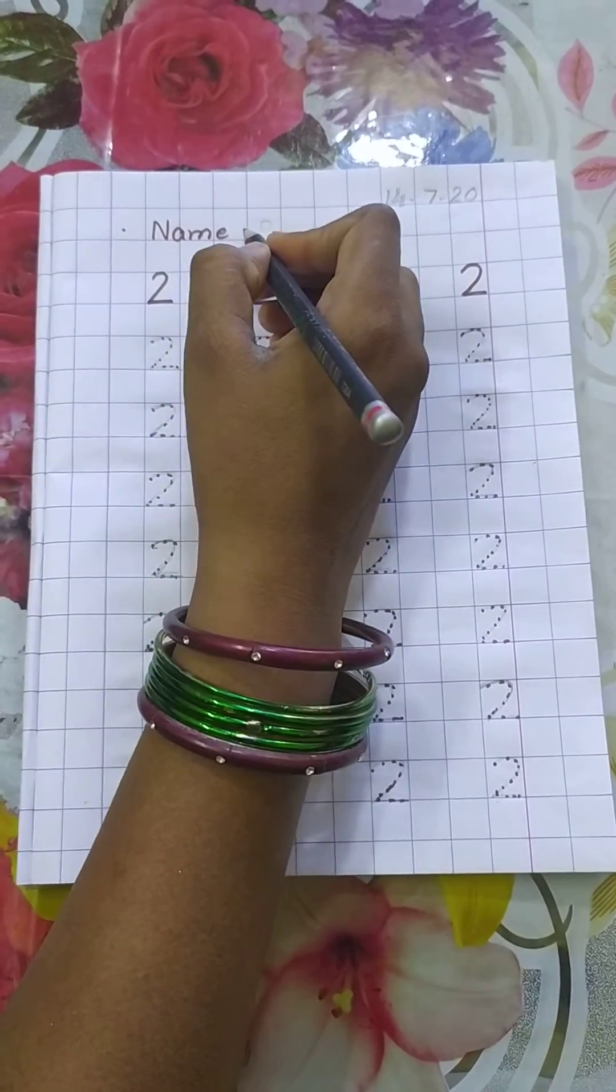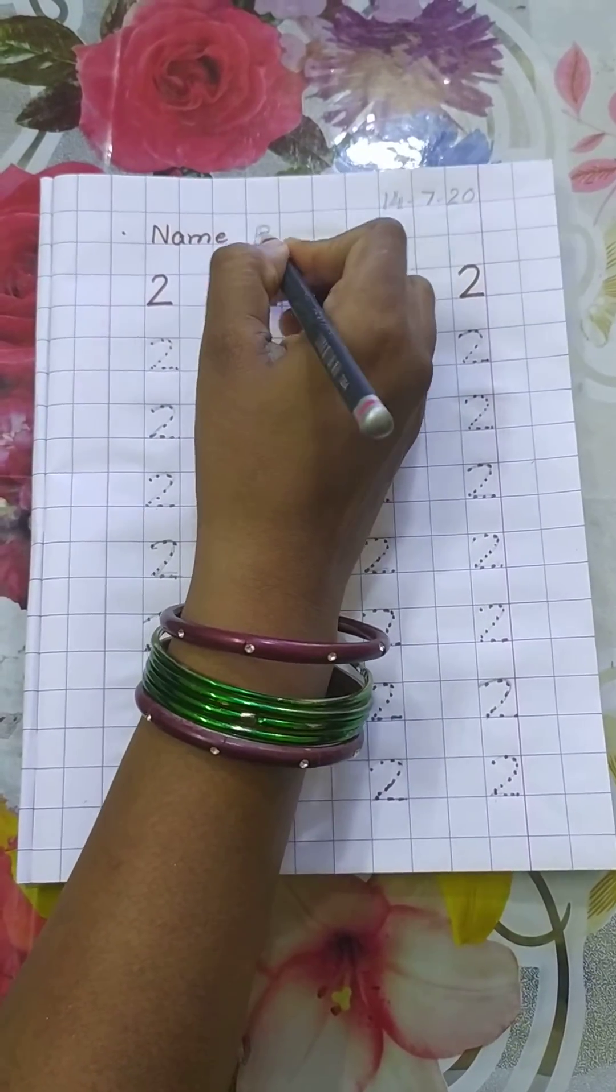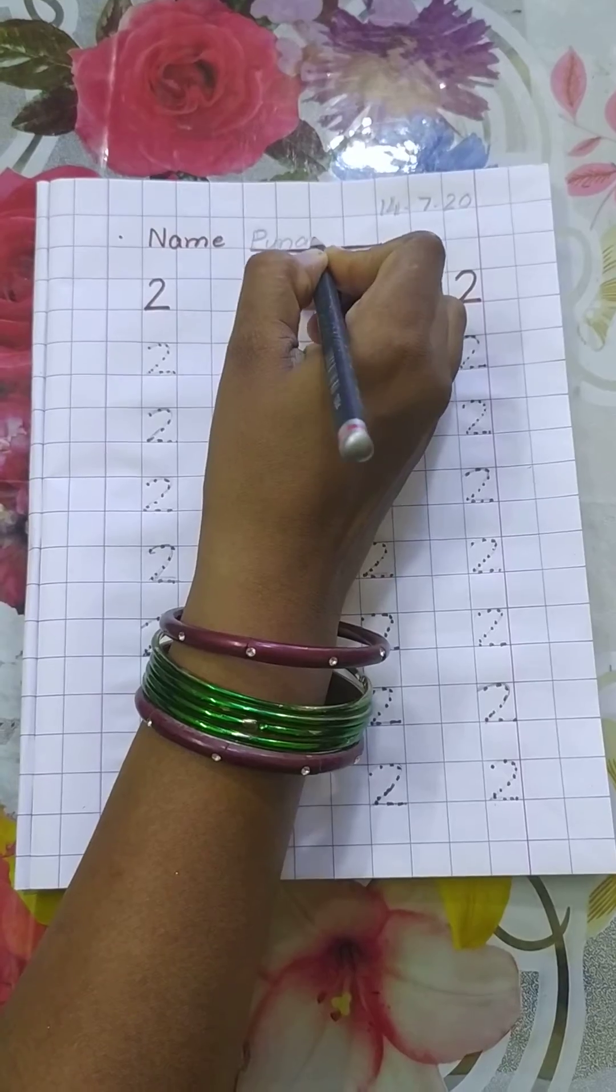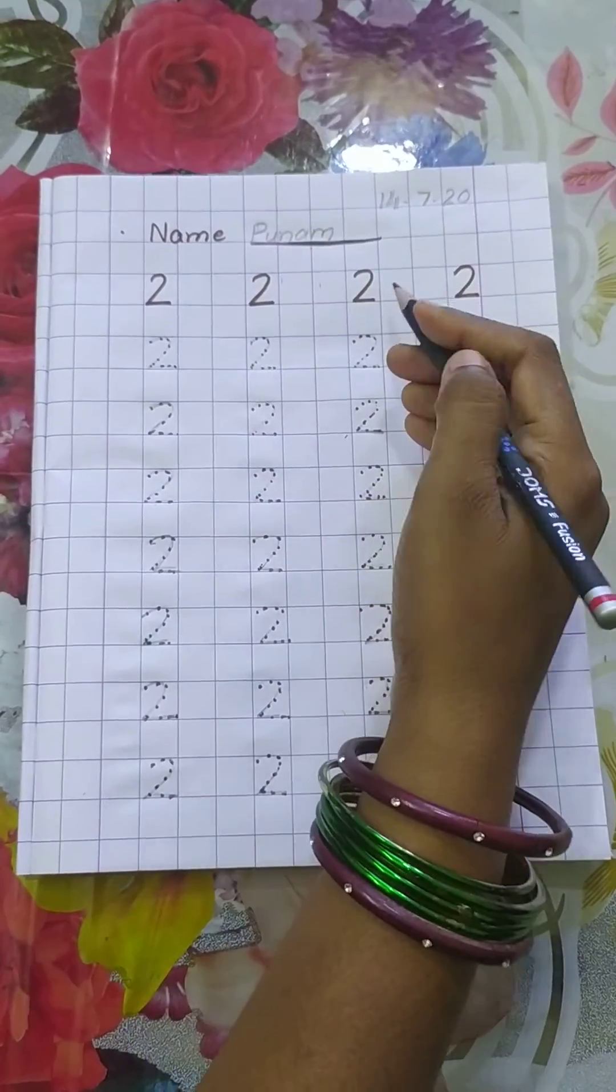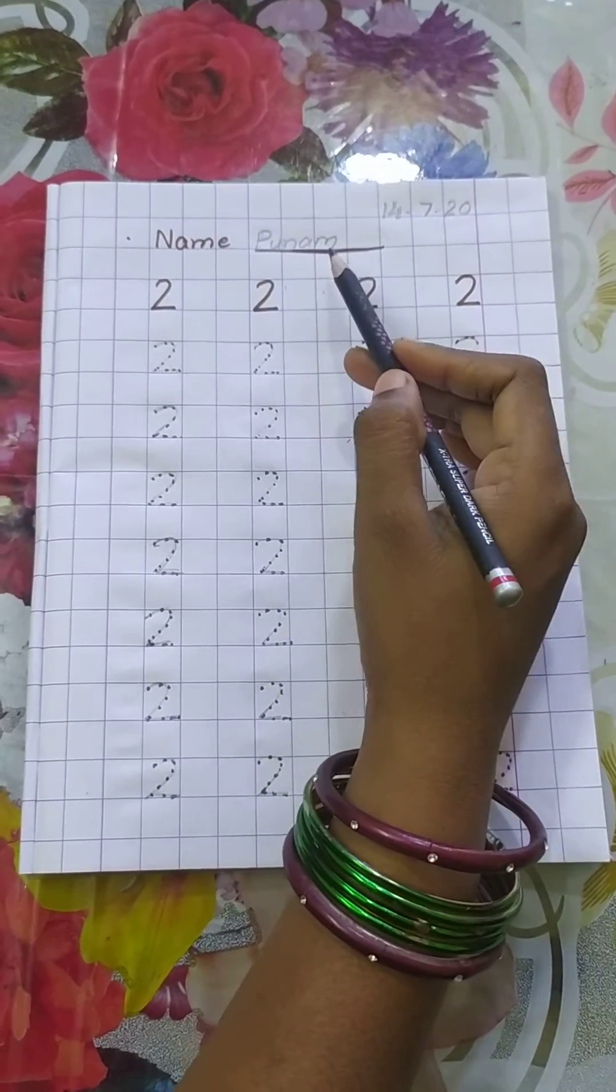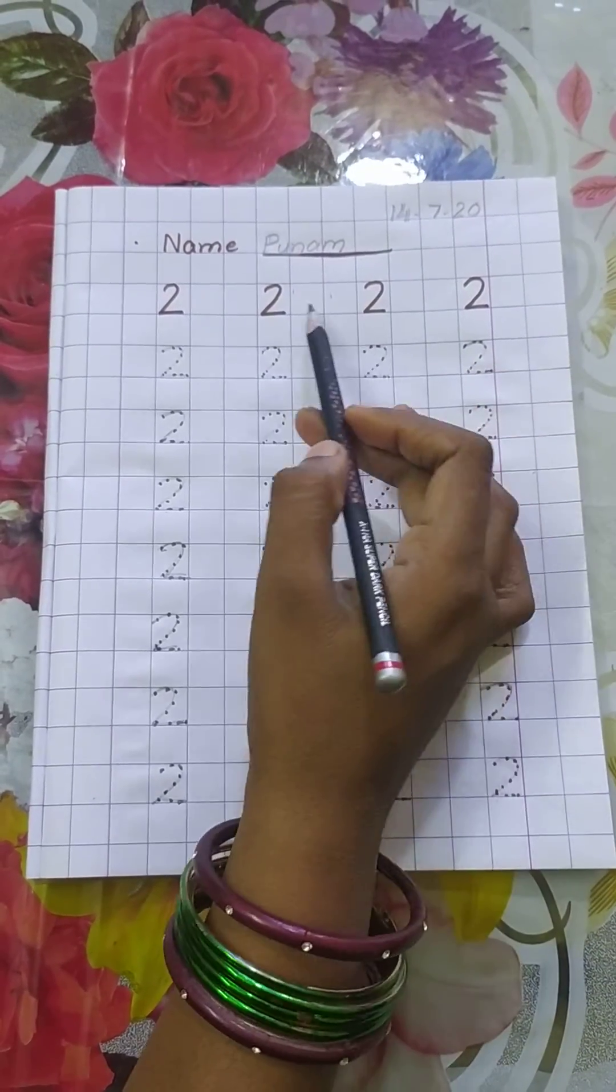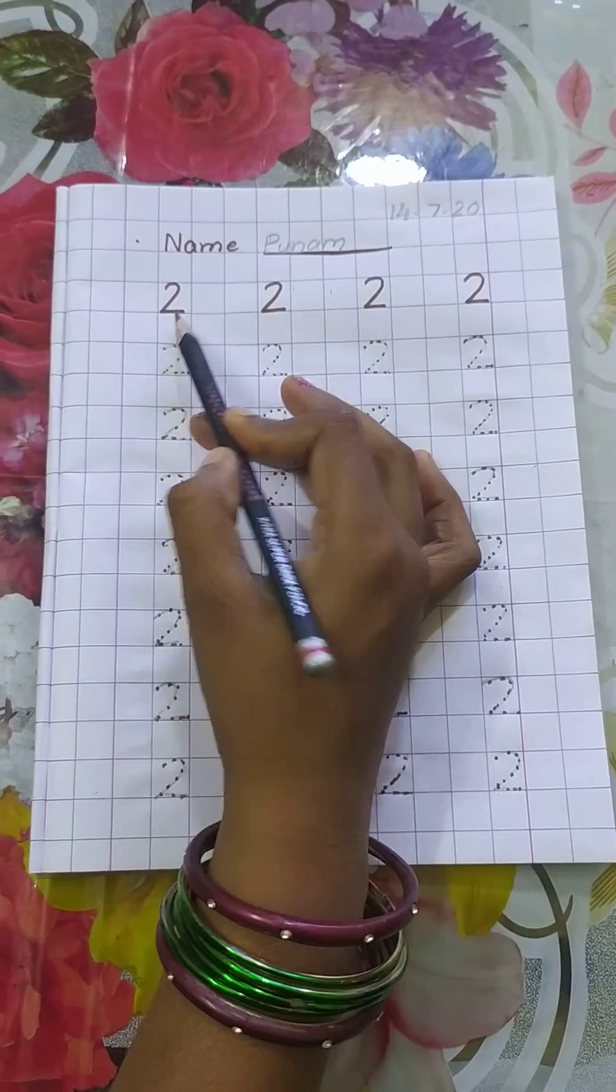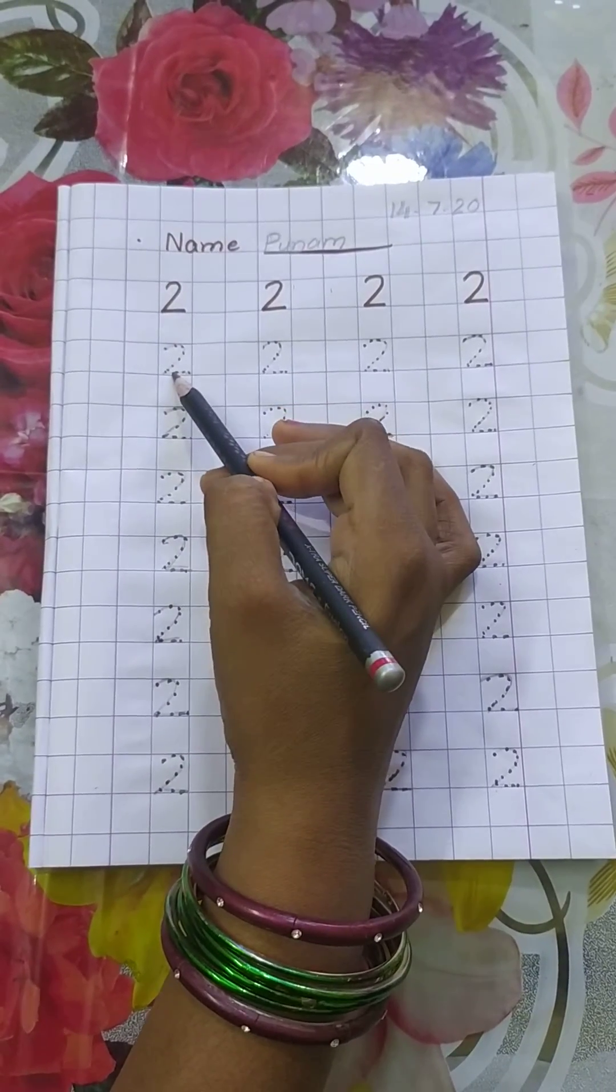Now we will write our name here. This is a request to the parents: Please write down date and name like this. Today we will write 2 by joining the dots.